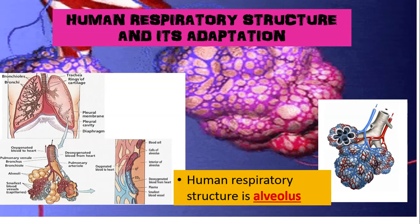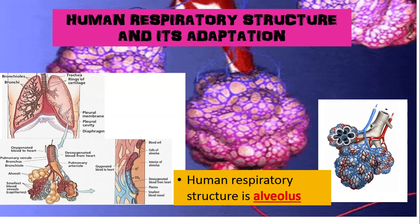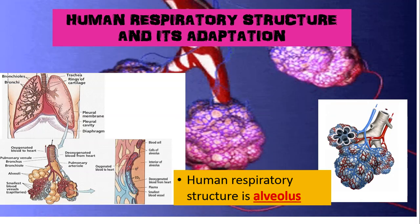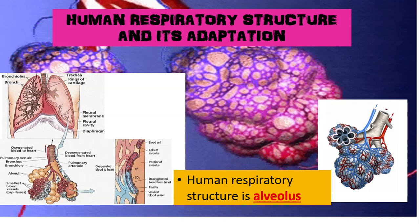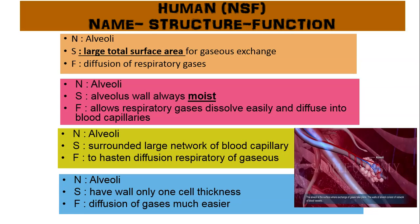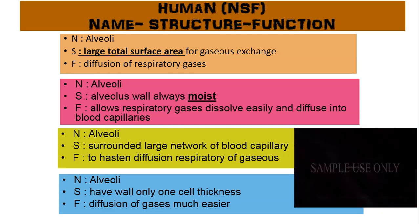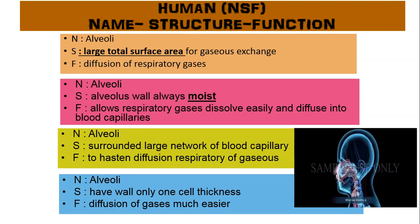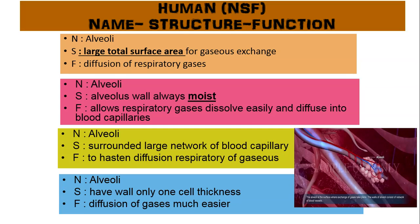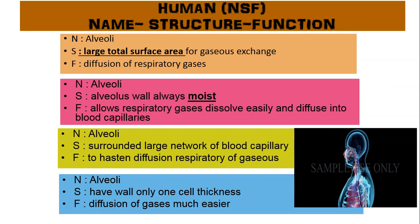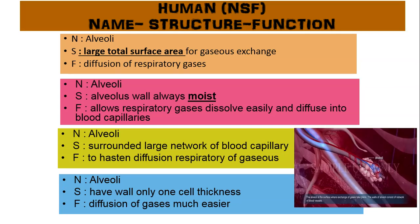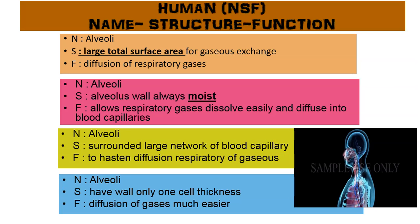Now we discuss the human respiratory structure and its adaptations. In humans, the respiratory structure used is called the alveolus (plural: alveoli). Alveoli have a large total surface area for gas exchange. The alveolus wall is moist to allow respiratory gases to dissolve easily. Alveoli are surrounded by a large network of blood capillaries to hasten the diffusion of respiratory gases. Lastly, alveoli have walls only one cell thick, making diffusion of gases much easier.